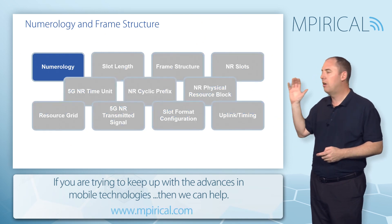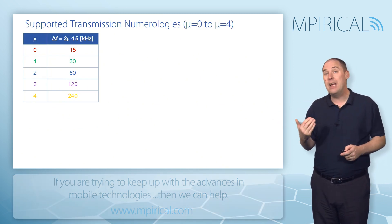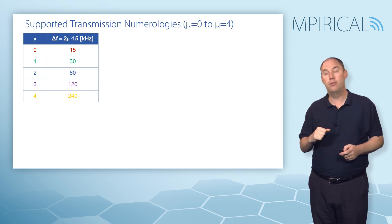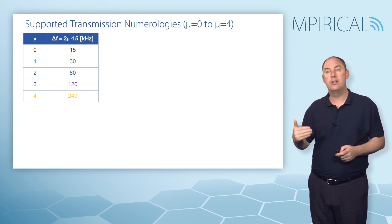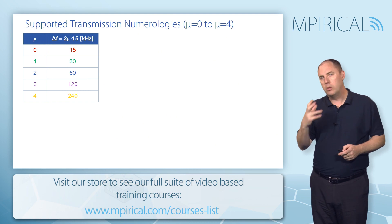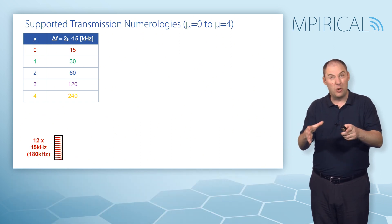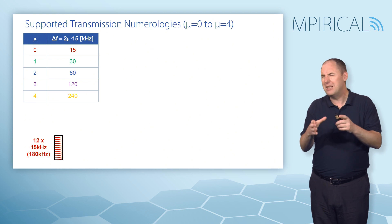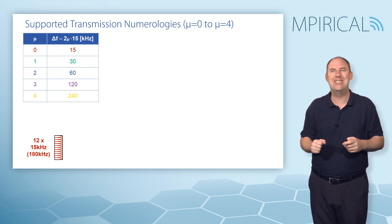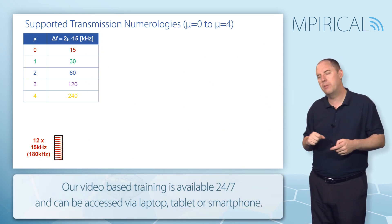So to start with, we're going to detail what numerology is. Numerology is effectively an indication of the sub-carrier spacing. Currently in 5G, numerology goes from 0 through to 4, corresponding to 15, 30, 60, 120, and 240 kilohertz sub-carrier spacing. What we're talking about here is taking our channel and creating what is a physical resource block — same terminology as in 4G, but slightly different here. This is a frequency domain concept, and that physical resource block will have 12 sub-carriers, just as in 4G. In this example, 12 times 15 kilohertz gives numerology 0, which equates to about 180 kilohertz.